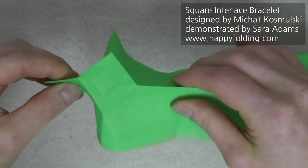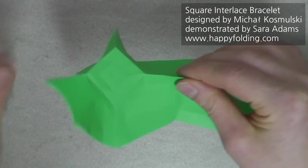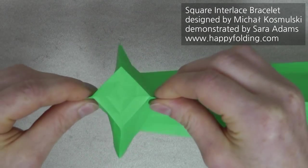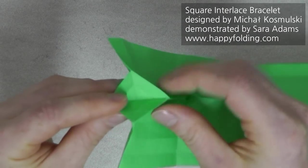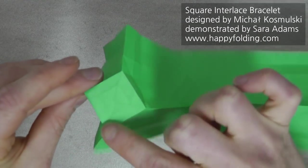We just need to change the direction of some of them. And then, almost automatically, these mountain folds will also pop up. Then we're going to take this and fold it in half from top to bottom.